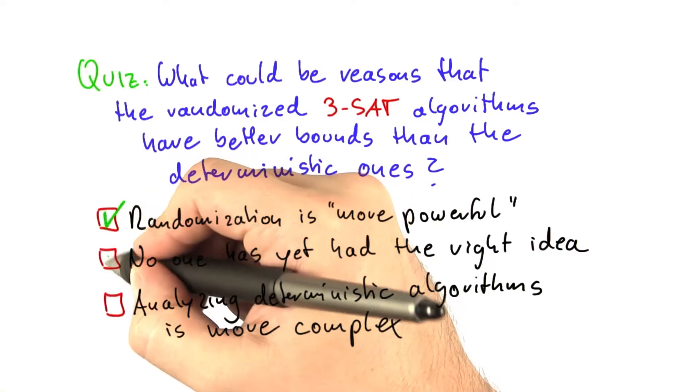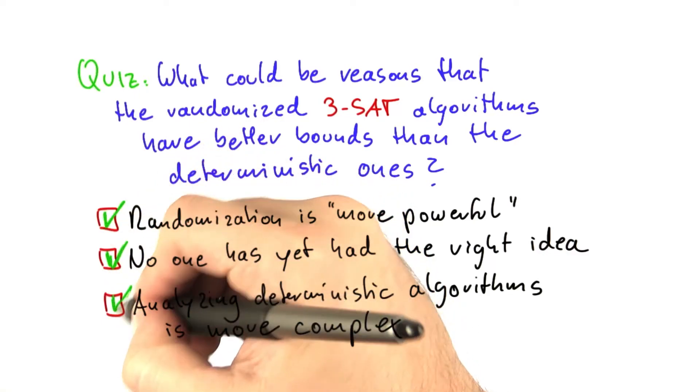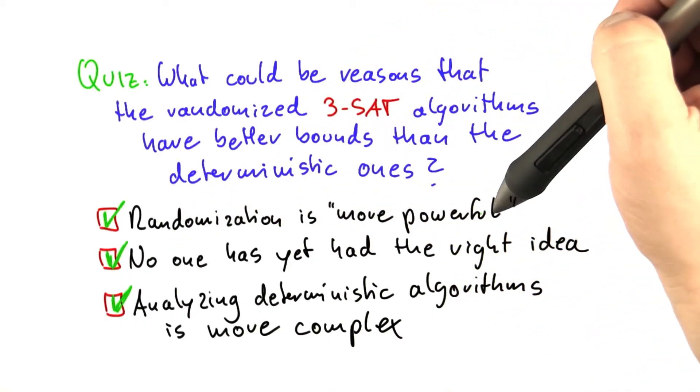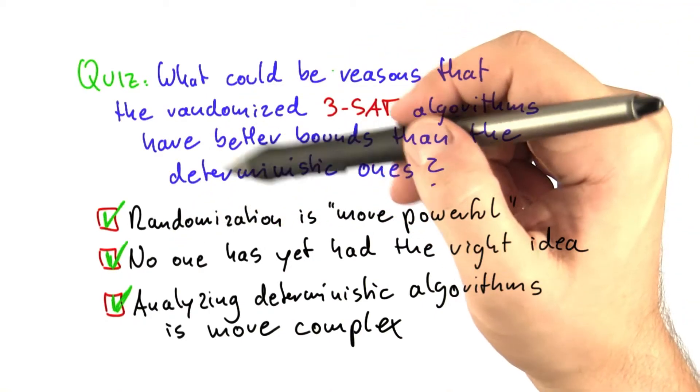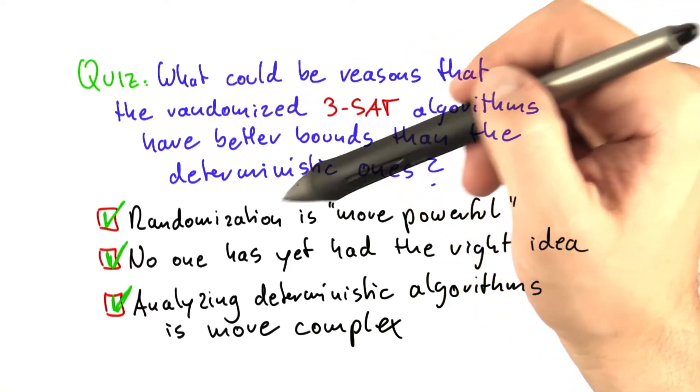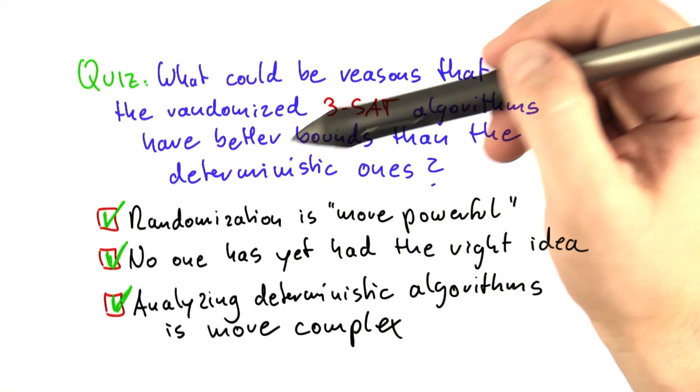And I would argue that all three arguments here are in a way correct. So you could argue that randomization is more powerful than determinism. Of course, we don't know why and we don't know if that is so. But it could be a valid reason that somehow randomization is a bit more effective.